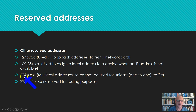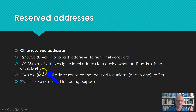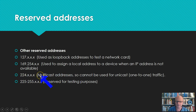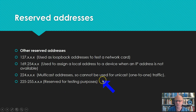224.anything is a Class D address — these are multicast addresses. We can't use them for unicast or one-to-one traffic. This is one-to-many traffic, so anyone subscribed to that multicast address can hear it, but it's only on a local network and cannot go out on the Internet. Finally, the rest of Class D and through Class E we simply don't use — those are reserved for testing purposes.